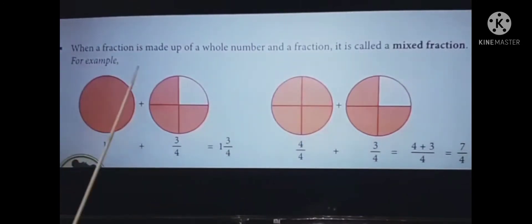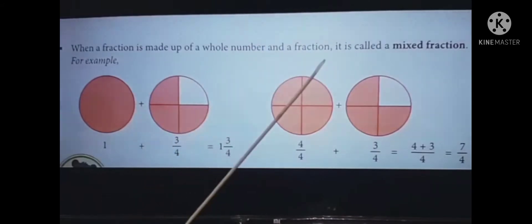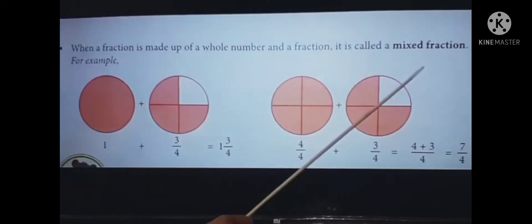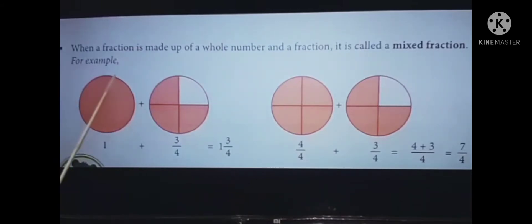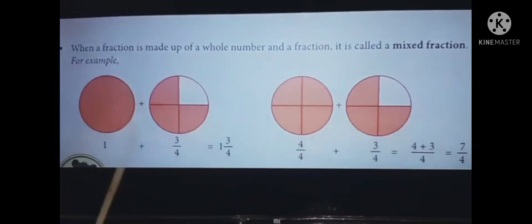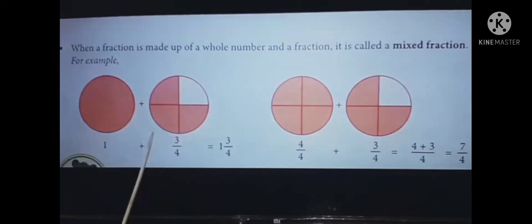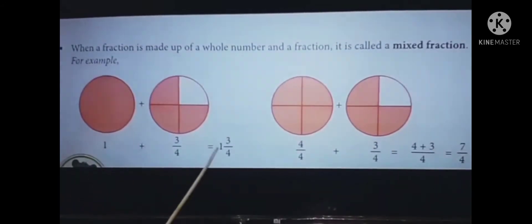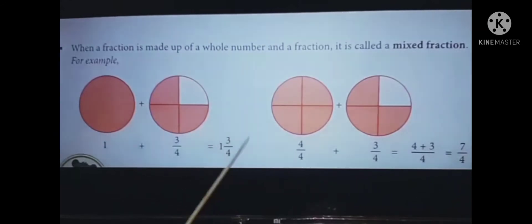Next is mixed fraction. When a fraction is made up of a whole number and a fraction, it is called a mixed fraction. For example, one whole part plus three-fourths shaded part. That's why one plus three-fourths is equal to one and three-fourths. It is a mixed form.